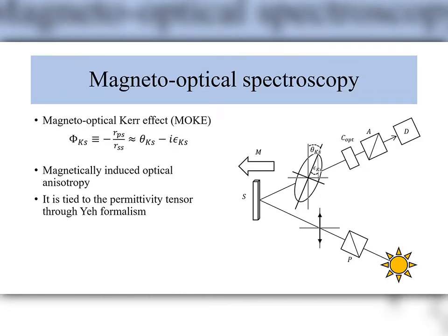The ferromagnetic properties of the four samples have been investigated by magneto-optical spectroscopy. Magneto-optical spectroscopy measures the magneto-optical Kerr effect, or MOKE for short. MOKE, for an incident S-polarized wave, is the ratio of the complex amplitudes of the reflected P and S-polarized waves, and it corresponds approximately to the rotation of the polarization ellipse in the real part and its ellipticity in the imaginary part. The magneto-optical Kerr effect is a measure of magnetically induced optical anisotropy, tied to the permittivity tensor through Yech's formalism.